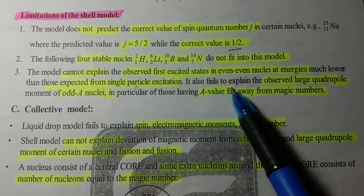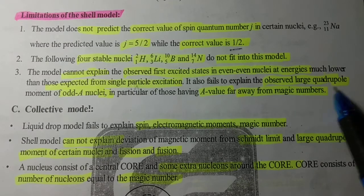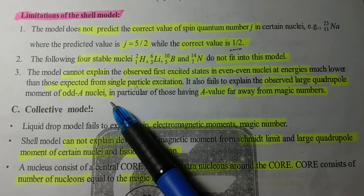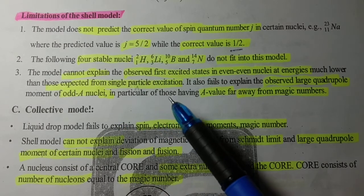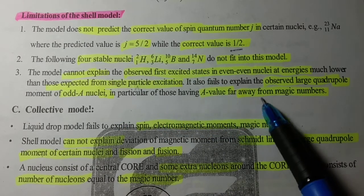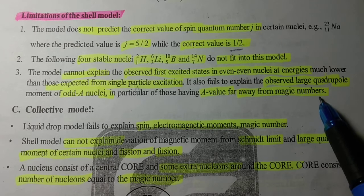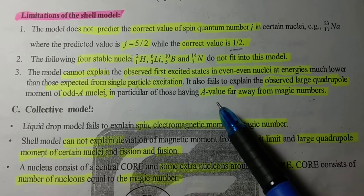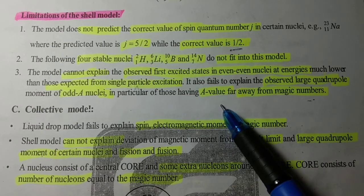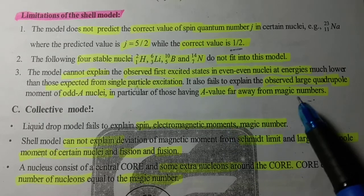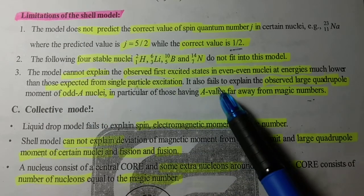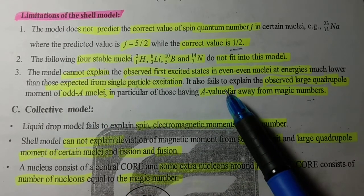It also fails to explain the observed large quadrupole moment of odd-A nuclei, in particular those having a value far away from magic numbers. For nuclei with certain mass numbers having high binding energy, their large quadrupole moments cannot be explained by the shell model.